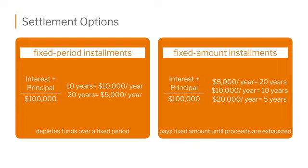Let's look at the fixed period of time. You've got a $100,000 death benefit, plus accrued interest, and you say you want all of that paid out in 10 years. Essentially, you'd receive $10,000 a year for 10 years and your money would be paid out to you. You could still be alive after 10 years and would no longer have that income, because you chose a fixed number of years to receive the money.